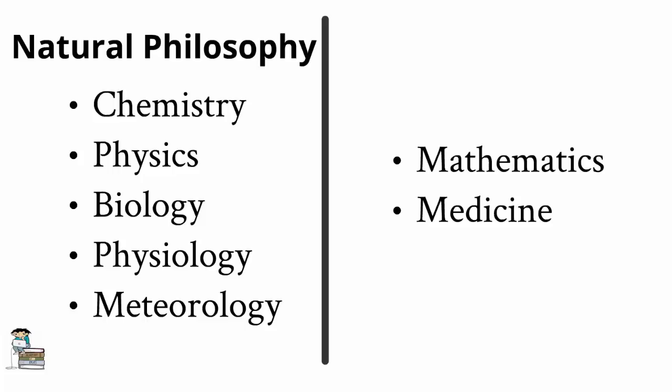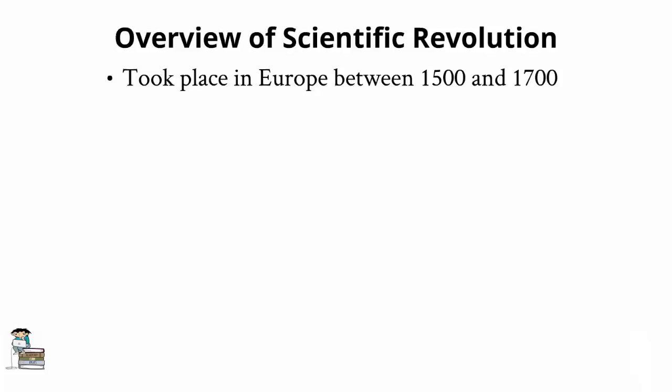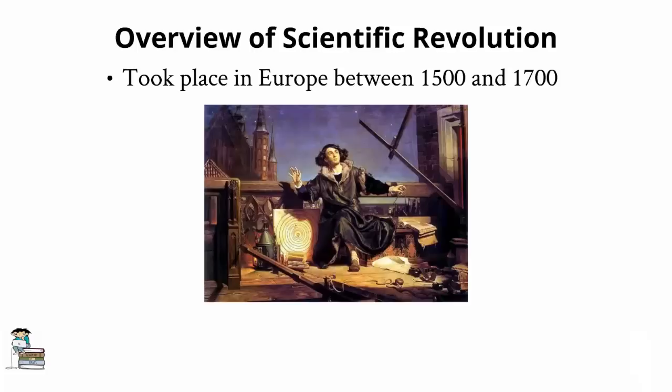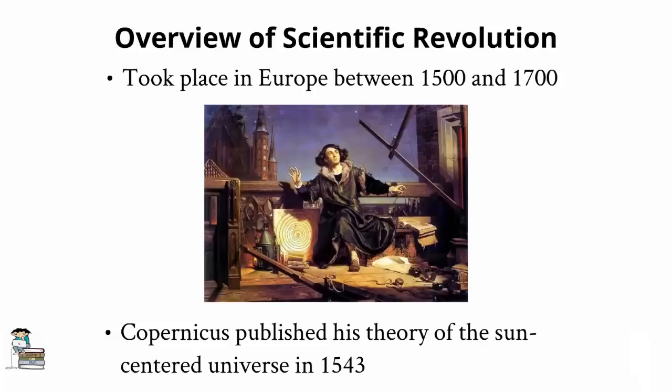The Scientific Revolution took place in Europe over the years 1500 to 1700 and was a period which saw remarkable advances in virtually all areas of science. Some mark the beginning of it in a somewhat arbitrary manner as coinciding with Nicholas Copernicus' development of the heliocentric or sun-centered universe. A theory he put forth in his book on the revolutions of the celestial spheres, which was published around the time of his death in 1543.